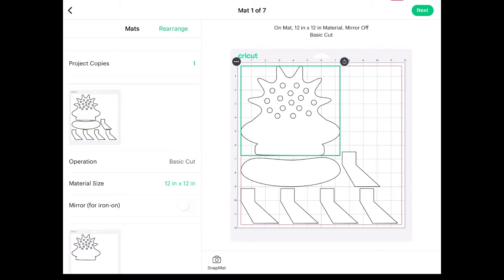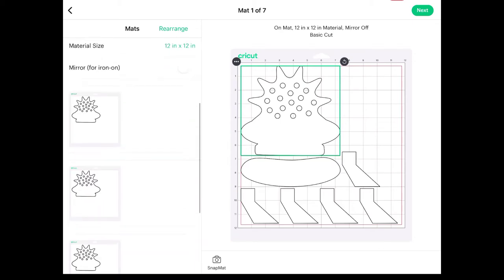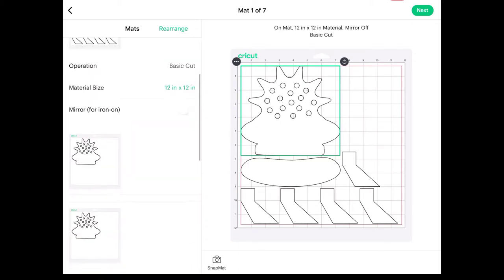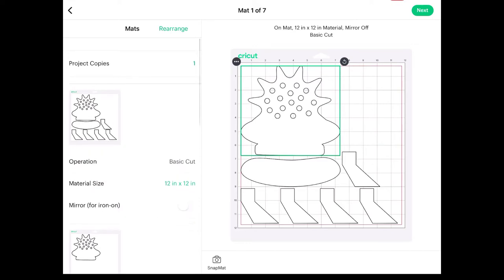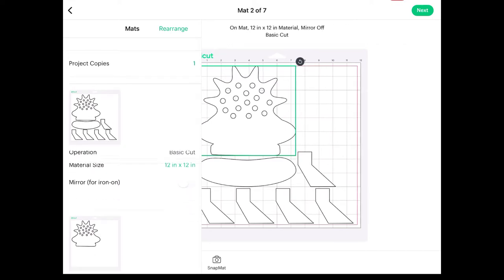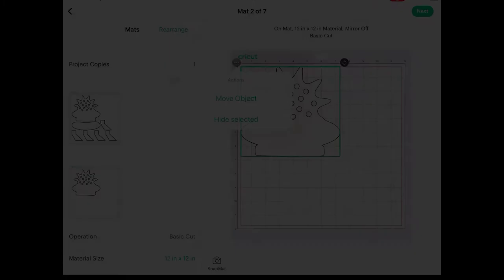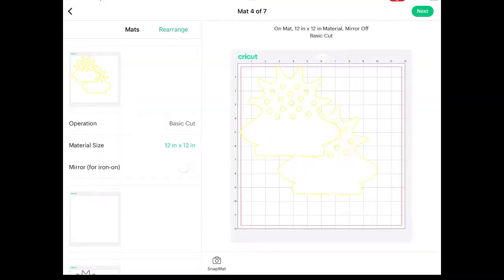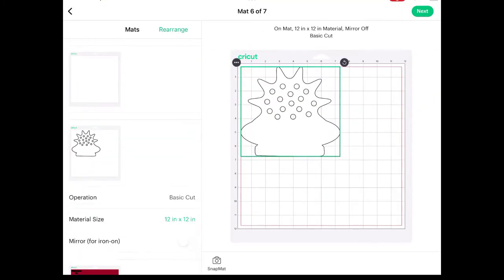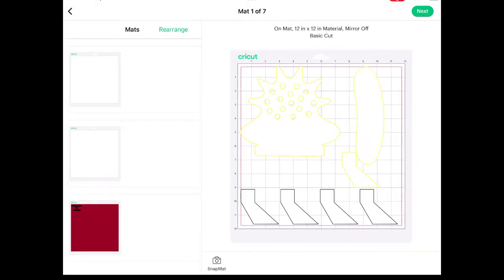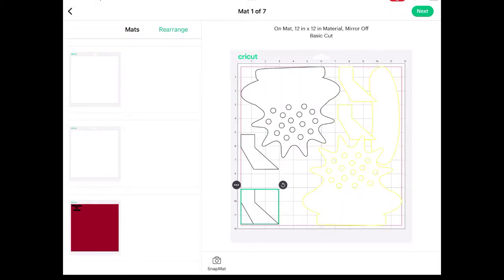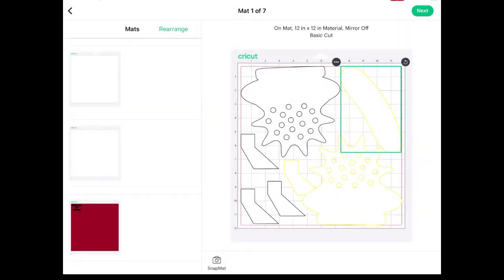Before I cut my file I want to make sure that I've optimized my paper usage. So what I'm going to do is move the items from different pages to get as many pieces per page as I can. I'm going to move this accent piece onto a different paper so that I can make it a different color so that my final design will pop.